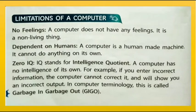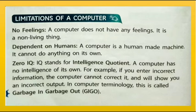Now, limitations of a computer. No feelings: a computer does not have any feelings — it is a non-living thing. Dependent on humans: a computer is a human-made machine and cannot do anything on its own. Zero IQ: IQ stands for Intelligence Quotient. A computer has no intelligence of its own. For example, if you enter incorrect information, the computer cannot correct it and will show an incorrect output. In computer terminology, this is called Garbage In, Garbage Out — GIGO.